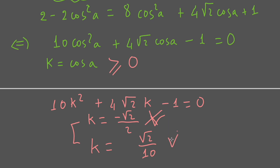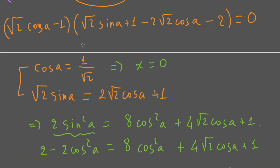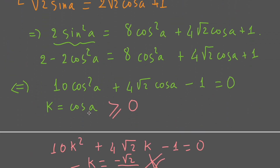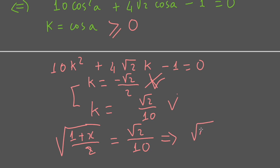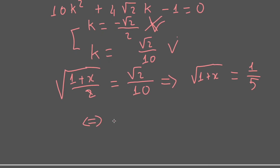By this, we replace it back into the substitution expression. Since cos a equals the square root of (1 plus x)/2, and cos a equals the square root of 2 over 10, we get (1 plus x)/2 equal to the square root of 2 over 10. This means the square root of (1 plus x) equal to 1 over 5, so 1 plus x equals 1 over 25, which gives x equal to 1/25 minus 1, equal to negative 24 over 25.